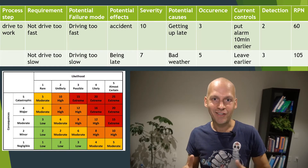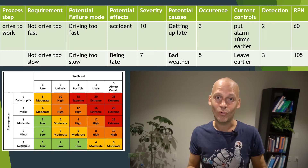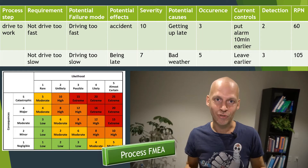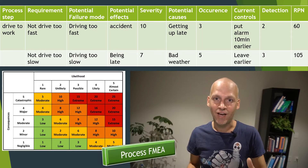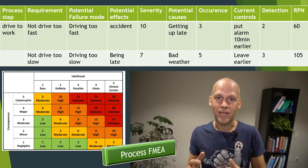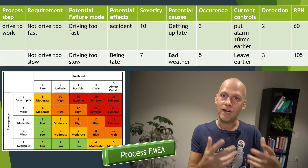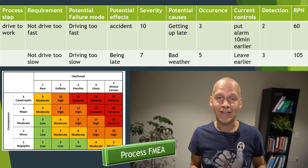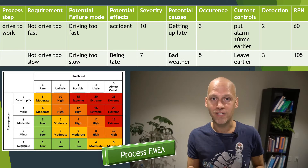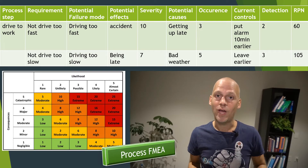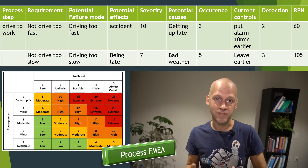Today I would like to talk about the process FMEA. A failure mode and effect analysis is a very common risk assessment tool in many industries. There are different kinds of FMEAs — there's the design FMEA where you analyze the functionality of a product, and there's the process FMEA where you analyze the risk in a process.